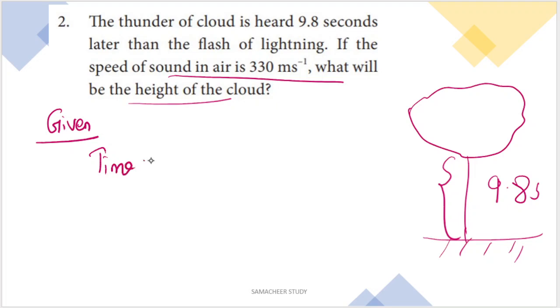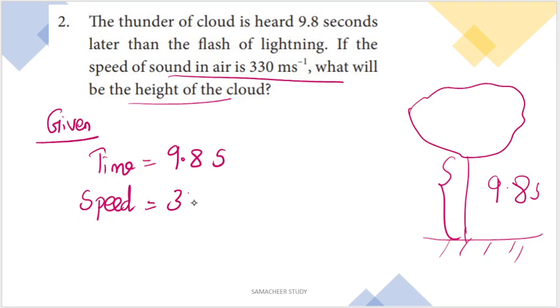Given: time = 9.8 seconds, speed of sound = 330 ms⁻¹. We need to find the height of the cloud, which is equal to the distance traveled by the sound.